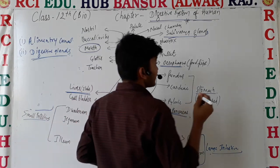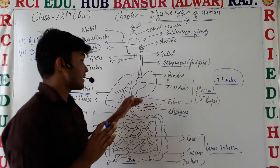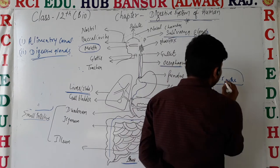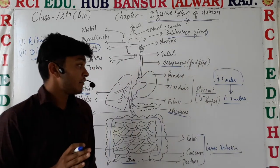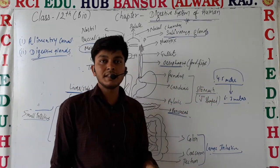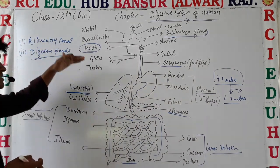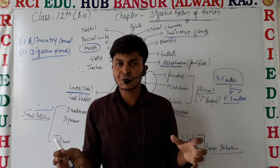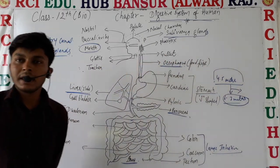The alimentary canal is almost 4.5 meters long. However, just after a person dies, its length increases to 6 to 7 meters. This happens because the alimentary canal is made of muscles. While we are living the muscles are active, but after death the muscles completely relax, and as they relax, the length automatically increases.